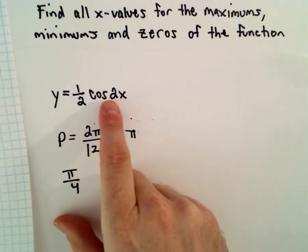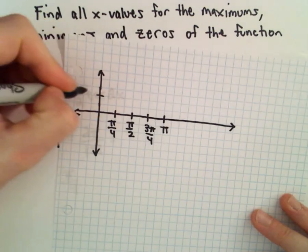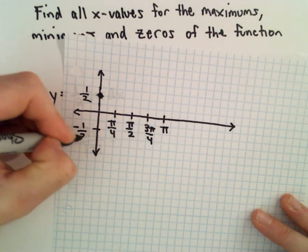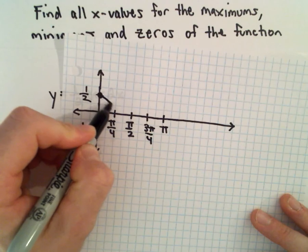If we put in x = 0, we'll get cos(0) which is 1. And then if we multiply that by 1/2, we'll be at positive 1/2. Again, not to scale, just a rough little sketch. So at 0, we're at 1/2.